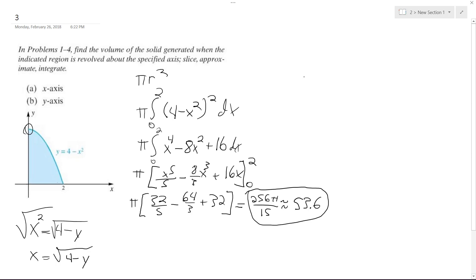So starting over here on the right, I'm going to integrate from 0 to 4, and it's still the same concept, so it's the square root of 4 minus y squared, so we get 4 minus y dy. And once integrated, we get pi, 4y minus y squared over 2, from 0 to 4.